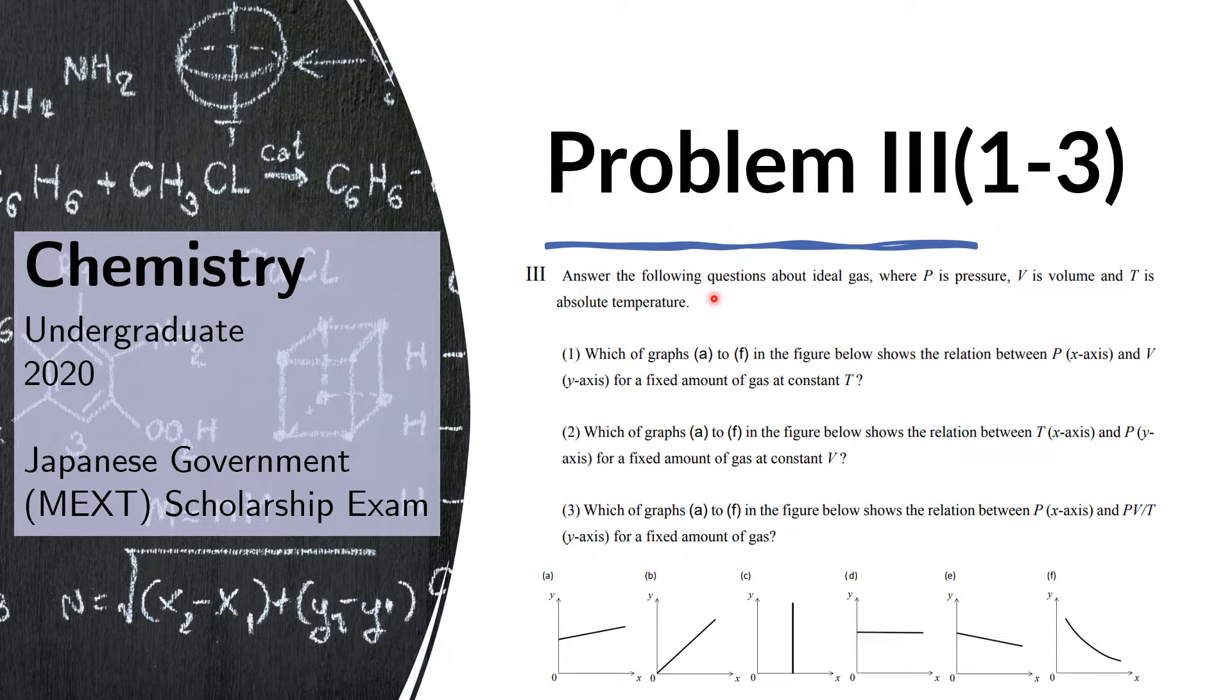The question reads: answer the following questions about ideal gas where P is pressure, V is volume and T is absolute temperature. First question is, which of the graphs A to F in the figure below shows the relation between P on the x-axis and V on the y-axis for a fixed amount of gas at constant temperature T?